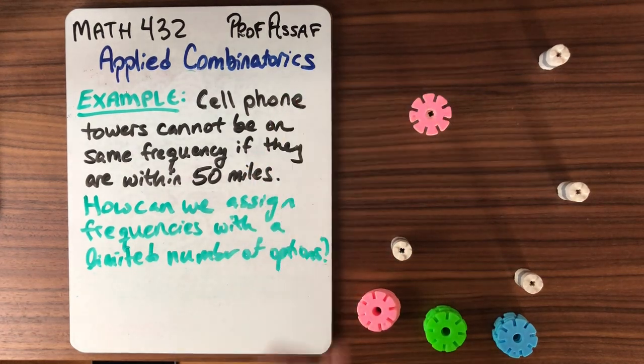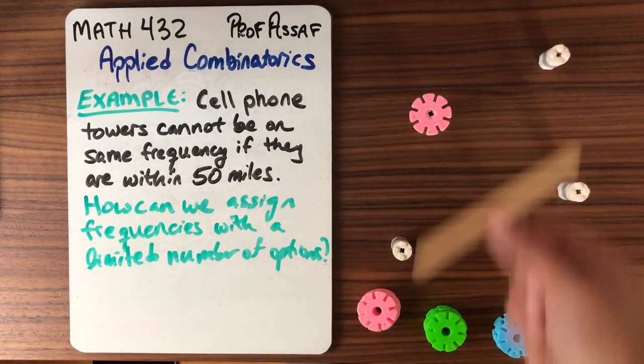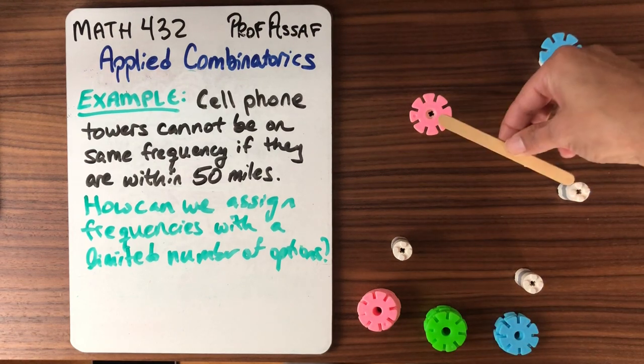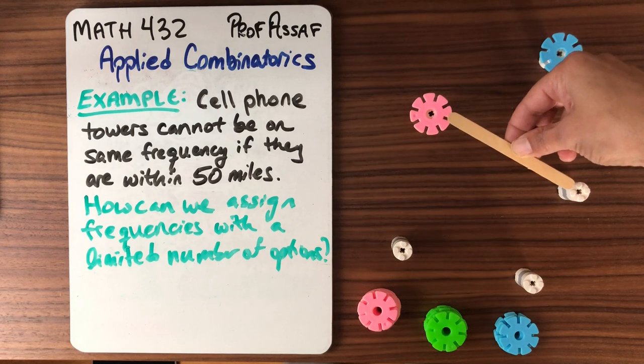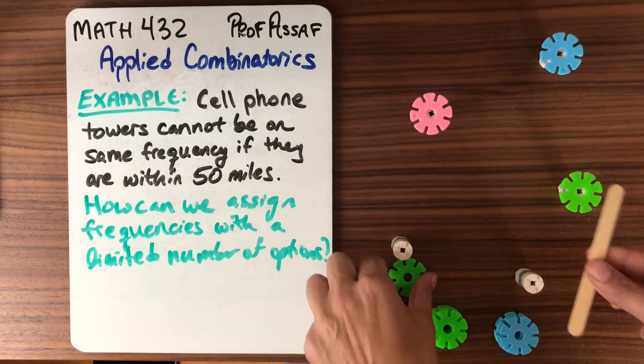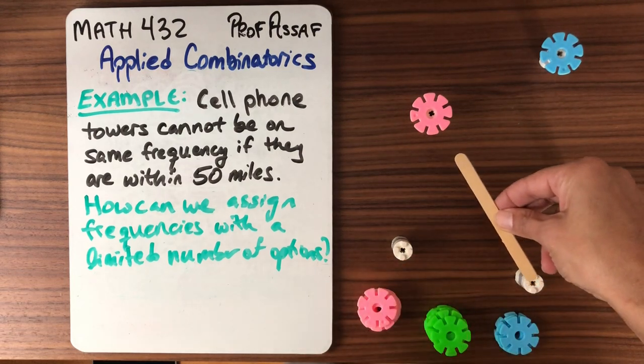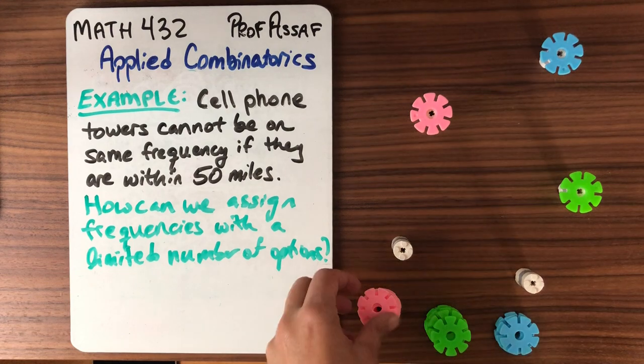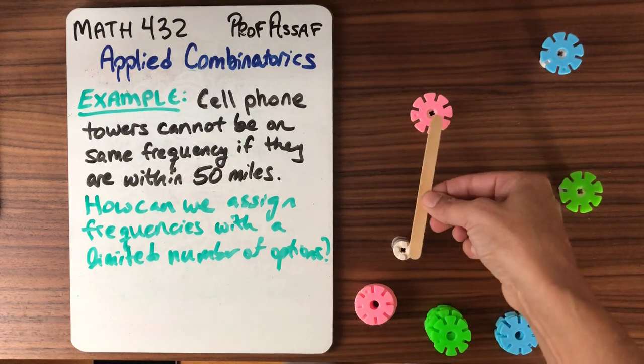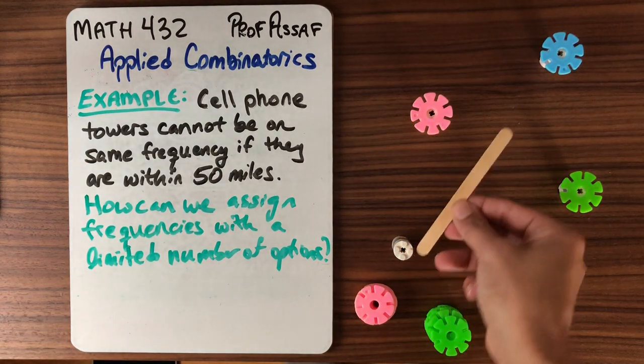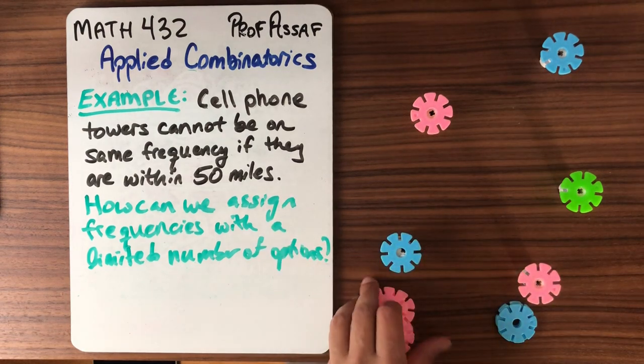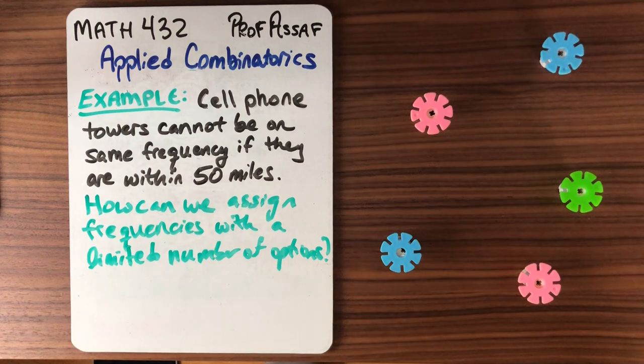So let's start and let's just assign a frequency here. Now we can say okay, these guys are too close together so he's gonna have to have a different frequency. What about these guys? These guys are too close together so it can't be blue, and actually those are too close together so it also can't be pink, so it's gonna have to be green. Are these guys too close together? I'm not too close to the pink or the blue, so it could be pink or blue. Let's maybe let it be pink. And now we can look at this guy and say okay, well it can't be pink. Still can't be pink. It could be green or blue. What the heck, let's make it blue. So here's one way that we could assign frequencies to these cell phone towers.